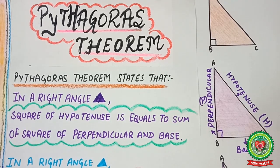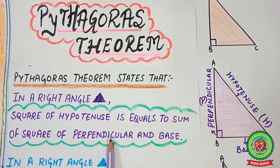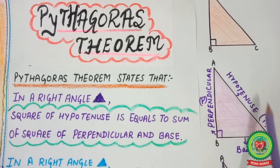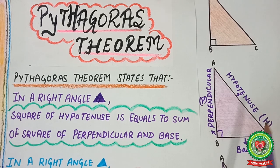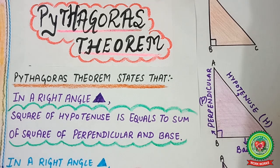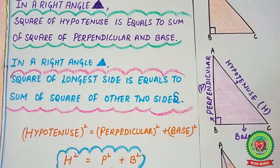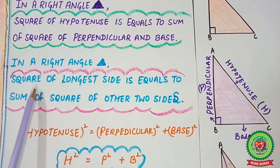Pythagoras theorem states that in a right-angle triangle, the square of the hypotenuse is equal to the sum of the squares of the perpendicular and the base. You can understand this from the figure as well.